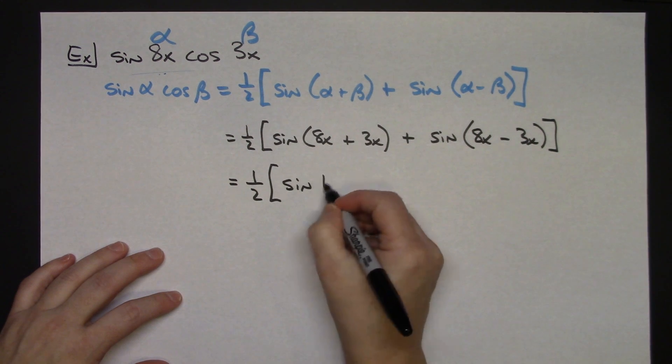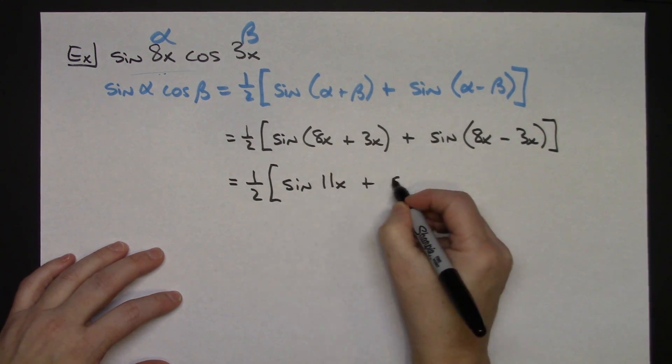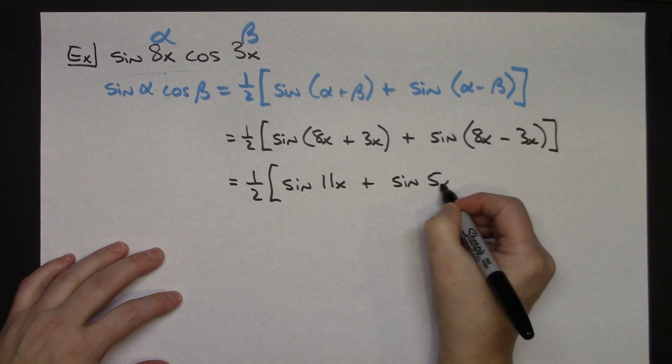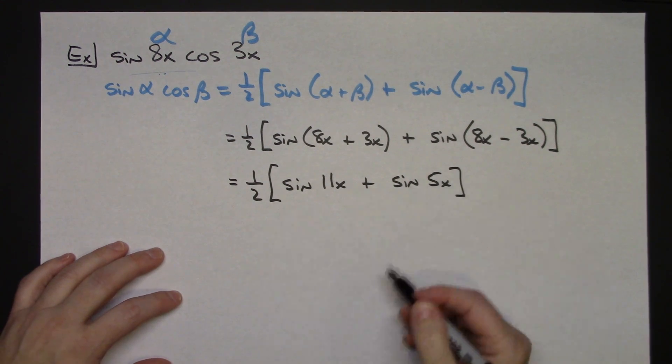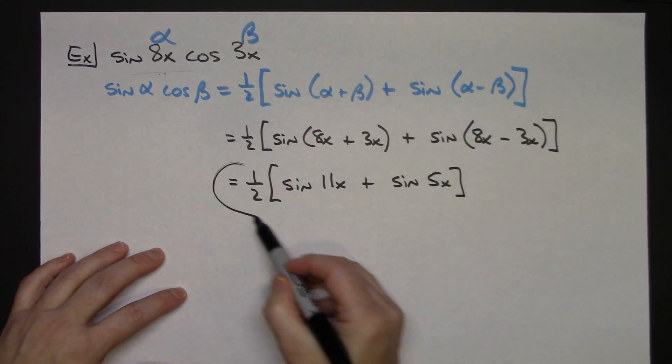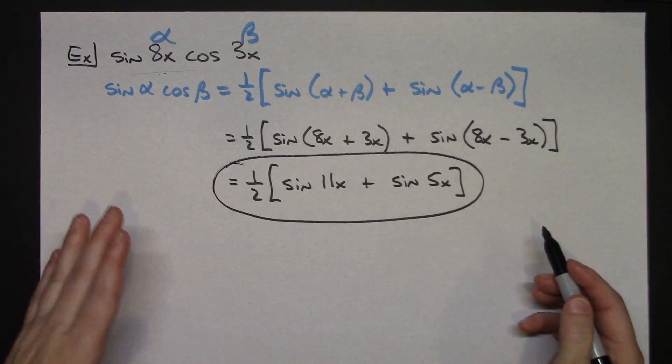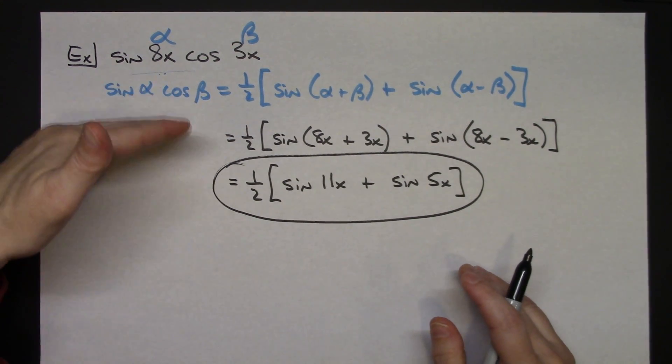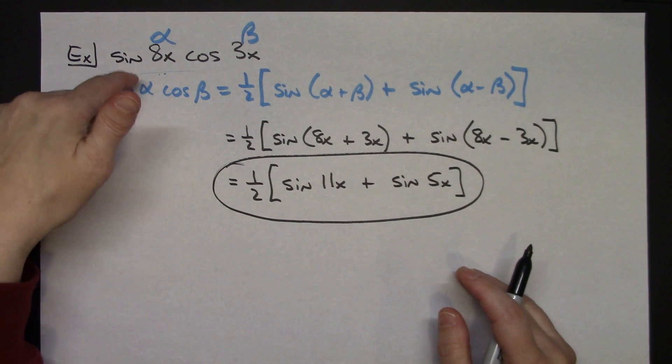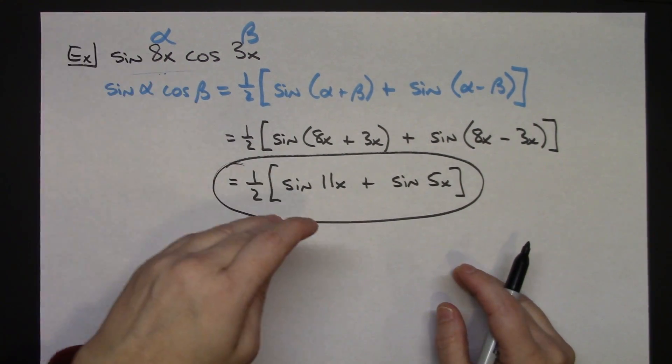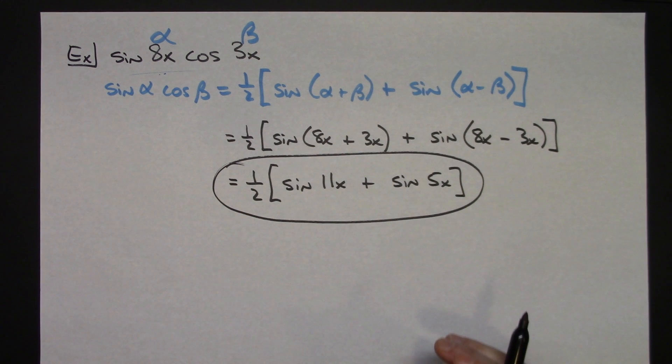One half times the quantity sine of 11x plus sine of 5x. And because we don't know the value of x, that's going to be as far as we can go on that. But just a straightforward implementation of that formula, taking the product, turning it into a sum.